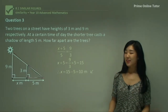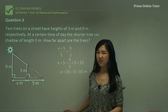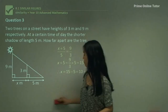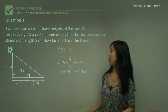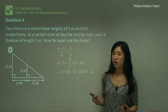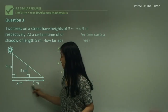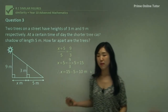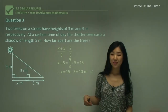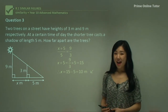So the distance between the two trees is 10 metres. This one required just one extra step — because it wasn't simply x on its own, we had to subtract five to get x. It's important to identify that x + 5 is the full side length we're working with, so make sure you don't just use x. And that was question three — some similar triangles.